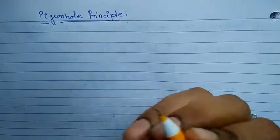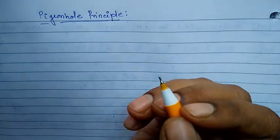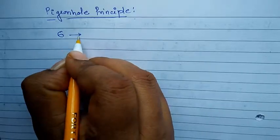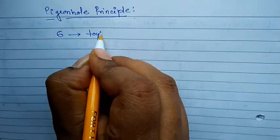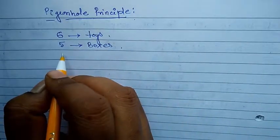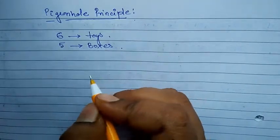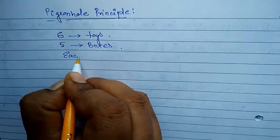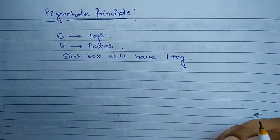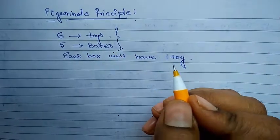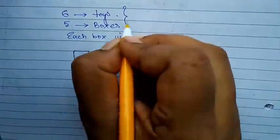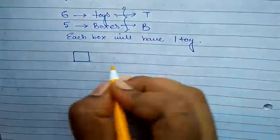Pigeonhole principle. Before I go on to explaining the principle, let's take one small example. Say I have six toys and I have five boxes. Now I have been asked to arrange the toys — to keep the toys in such a way that each and every box will have one toy.